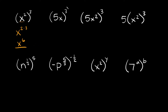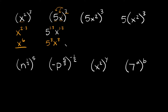Next example: we have 5x in parentheses raised to the third power. What you're going to do here is apply this exponent to everything inside of the parentheses — so to the 5 and to the x. The 5 is just 5 to the first power, and x is x to the first power. Think of the exponent as distributing: 5 raised to the 1 times 3, and x raised to the 1 times 3. Simplifying, we have 5 to the third power and x to the third power. 5 cubed equals 125, so your simplified answer is 125x³.